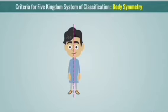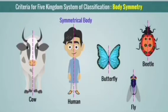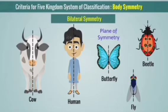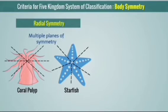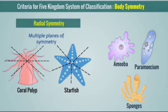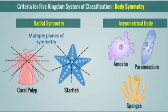Body symmetry: animals are separated by a central plane forming equal halves. Humans, cows, butterflies, and insects are separated by a central plane into two equal halves — this is called bilateral symmetry, where 'bi' means two. In lower organisms like starfish, multiple planes divide the organism into many identical halves — this is called radial symmetry. Lower organisms like amoeba, paramecium, and sponges cannot be separated into two equal halves — they are called asymmetrical animals.